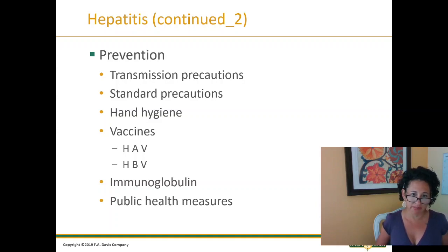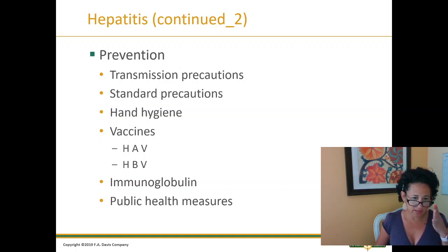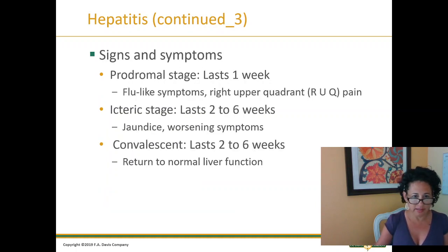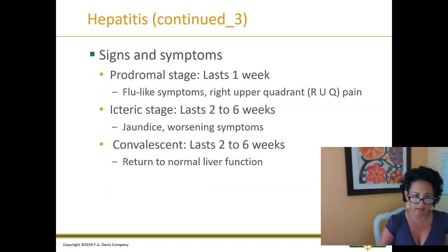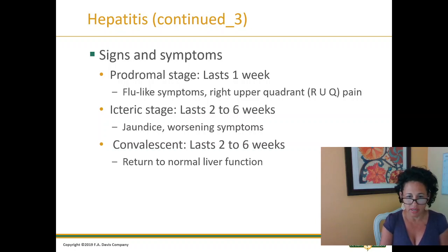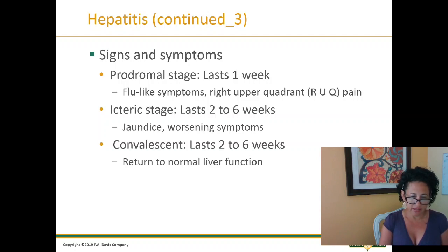Prevention, transmission, precautions: standard precautions, hand hygiene, vaccines — we have some vaccines — immunoglobulin, and public health measures. Signs and symptoms are flu-like symptoms that you're going to see for hepatitis, including right upper quadrant pain.